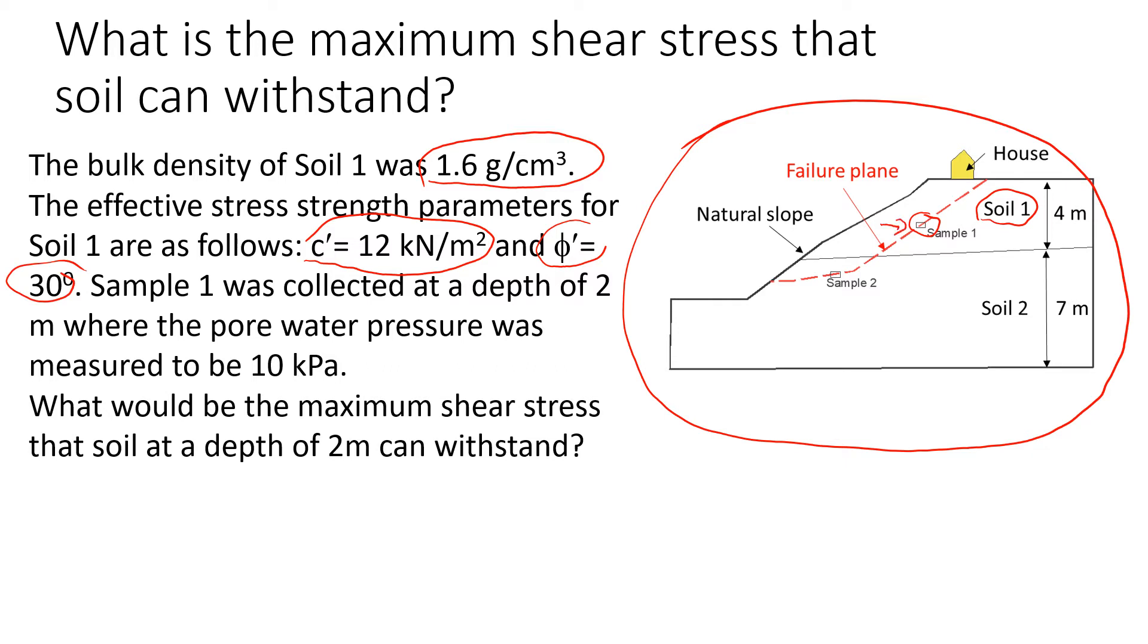We collected a sample from a depth of 2 meters, and when we measured the pore water pressure it was about 10 kPa at that point. So the question is, how can we estimate the maximum shear stress that Soil 1 from Sample 1 can withstand?